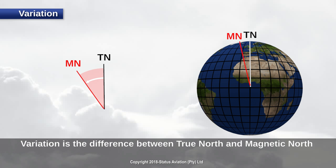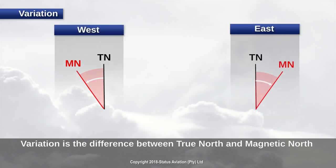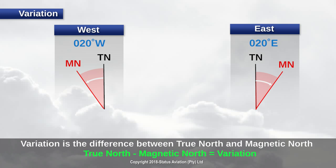It is measured from true north to the magnetic north as indicated. Variation is also given a direction. For example, if the magnetic north is east of true north, the variation will be east and vice versa. Direction is indicated with a suffix W for west and E for east. Since variation is the difference between true north and magnetic north, it can actually be described as variation being equal to true north minus magnetic north. This formula can be rearranged to find true north or magnetic north if we were given the variation.